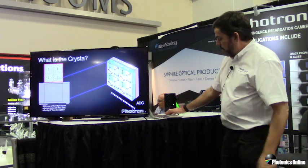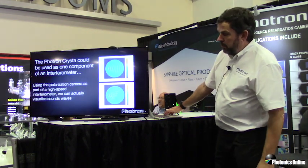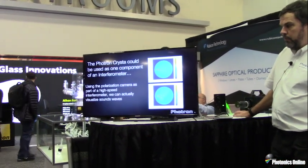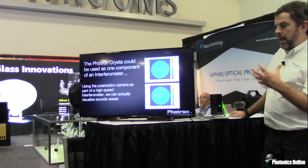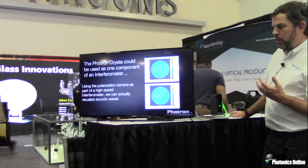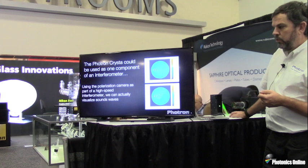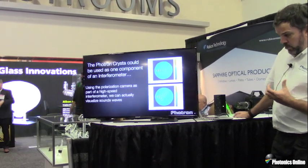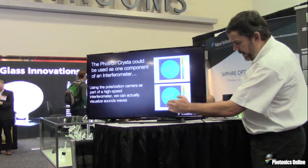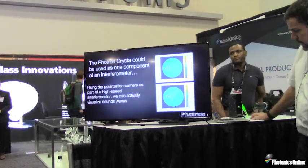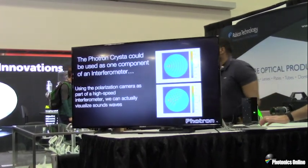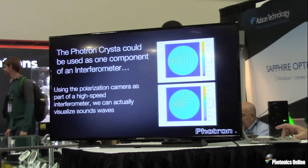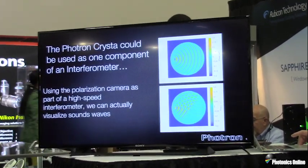Here we show our Crystal as part of a Fizeau interferometer, where we're able to visualize sound waves. Both recordings were made at 40,000 frames per second — the top one shows a loudspeaker emanating sound, and the bottom one shows the same but with a plate reflecting the sound back. The high-speed 2D polarization camera can become a very critical component of an interferometer.